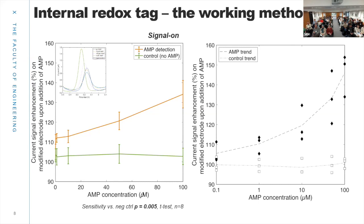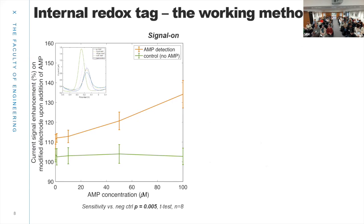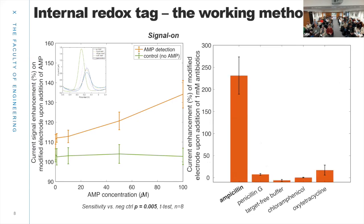Also, my next step with this method was to test the sensitivity and selectivity of the aptamer. I tried some other antibiotic targets such as penicillin G — also from the same antibiotic class — chloramphenicol, and oxytetracycline. These measurements were all at one millimolar of the residues, which is quite high, and there was still no response compared to ampicillin.